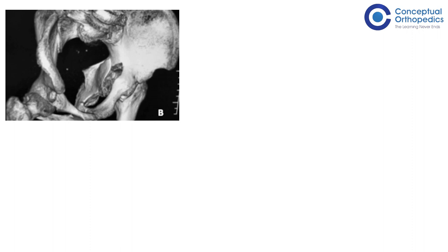So, this is the particular problem that some surgeons face with regards to the ilioinguinal approach, and hence a newer approach was sought to make life easier - to try to approach the particular bone from the side where it is fractured rather than from the top. In this 3D pelvic bone model, we could see that most of the fractures involve the quadrilateral plate and there is a so-called central dislocation of the femoral head where the femoral head goes inwards into the pelvic brim.